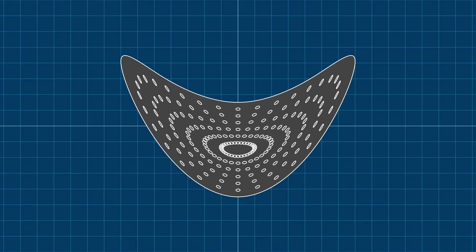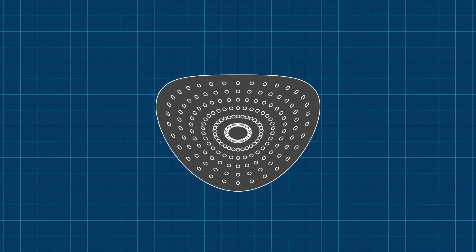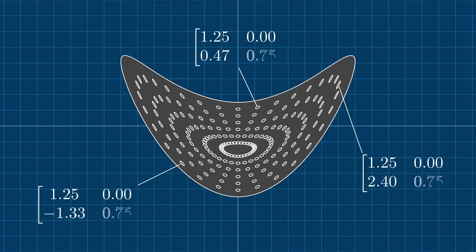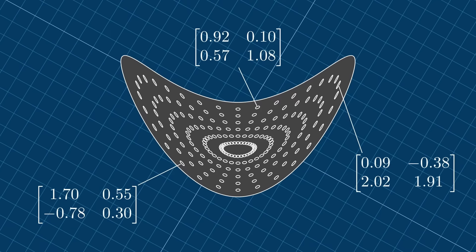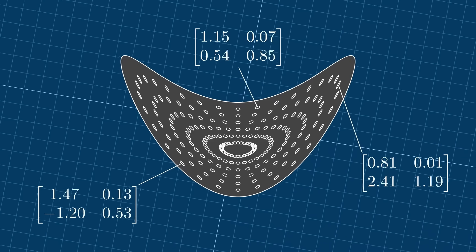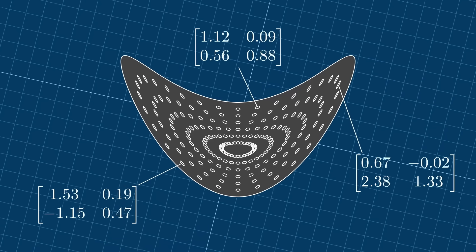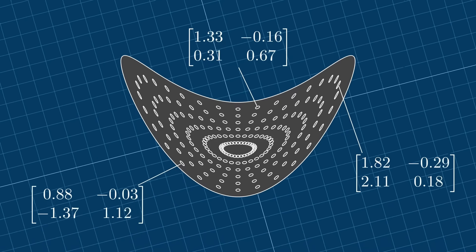You might already notice that the way the circles deform looks a little bit like the deformation we saw when visualizing second-order tensors. In fact, at each point the deformation of the small circles can be described by a second-order tensor. And it's important that the deformation of the small circles does not change if we change the coordinate system. The deformation and the second-order tensor describing the deformation are independent of the coordinate system. Only the matrices describing the tensors change.